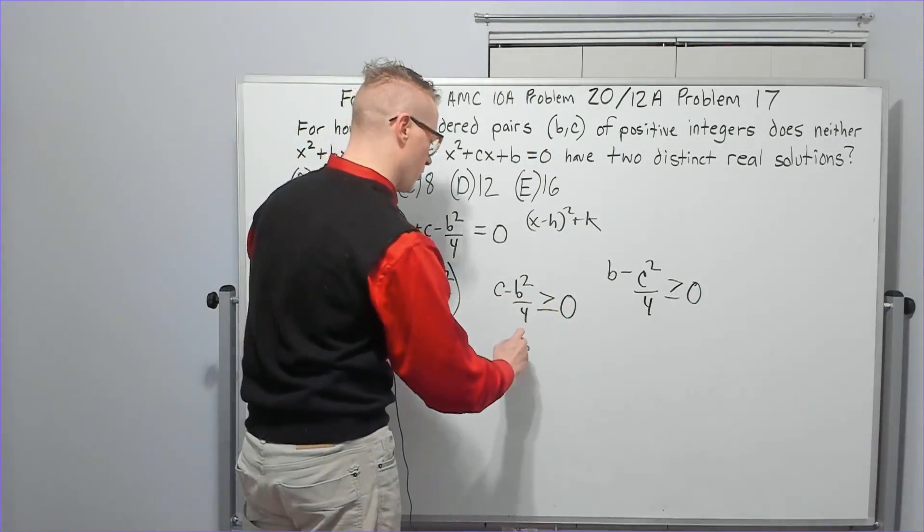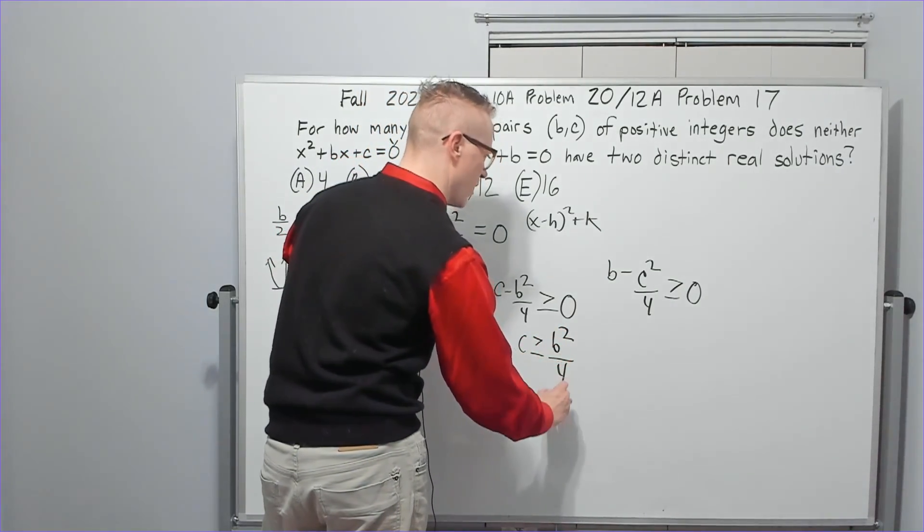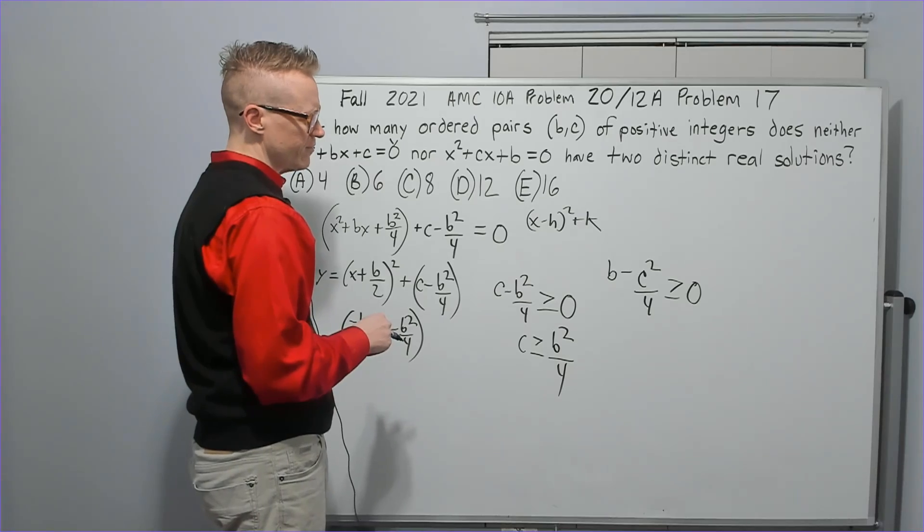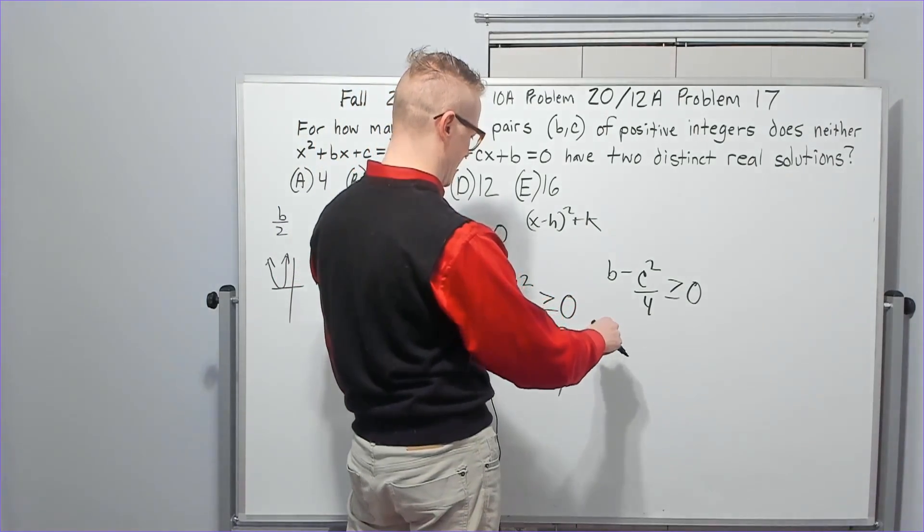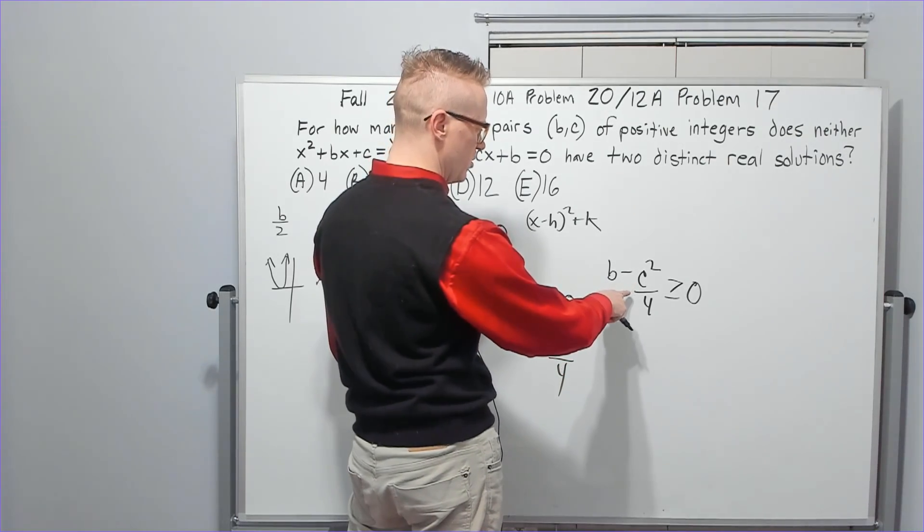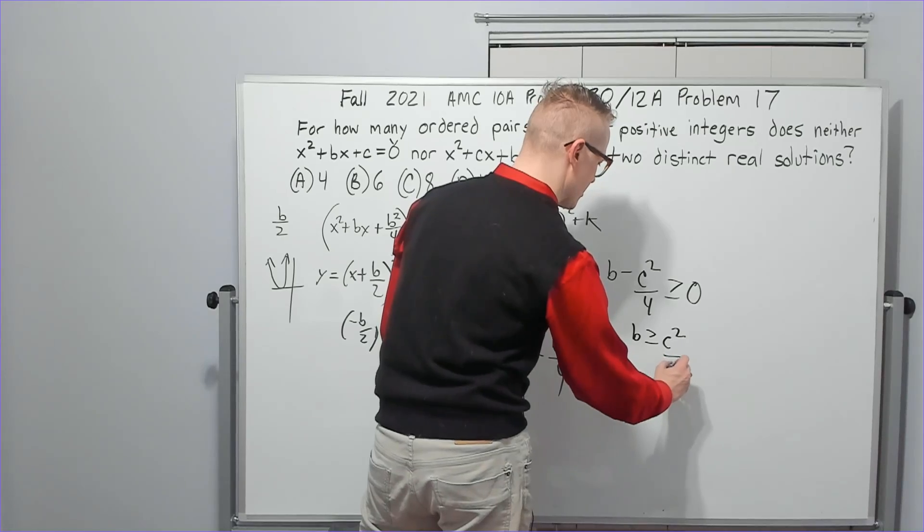Okay, then from there, let's move the b squared over 4 here. So I've got c is greater than or equal to b squared over 4. And let's go ahead and also move this here. b greater than or equal to c squared over 4.